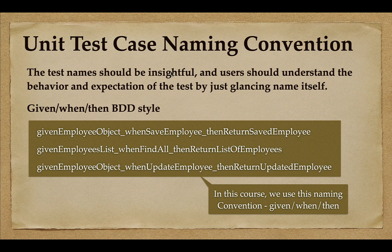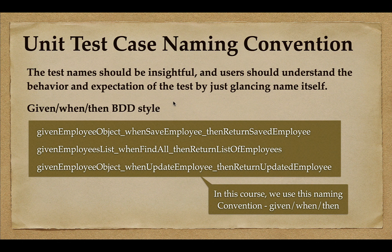If you follow the Given/When/Then BDD style naming convention, your unit tests will be readable and descriptive. For example: 'givenEmployeeObject_whenSaveEmployee_thenReturnSavedEmployee' or 'givenEmployeeList_whenFindAll_thenReturnListOfEmployees'. In this course we will follow this BDD-style naming convention, dividing each unit test into three parts: Given, When, and Then.